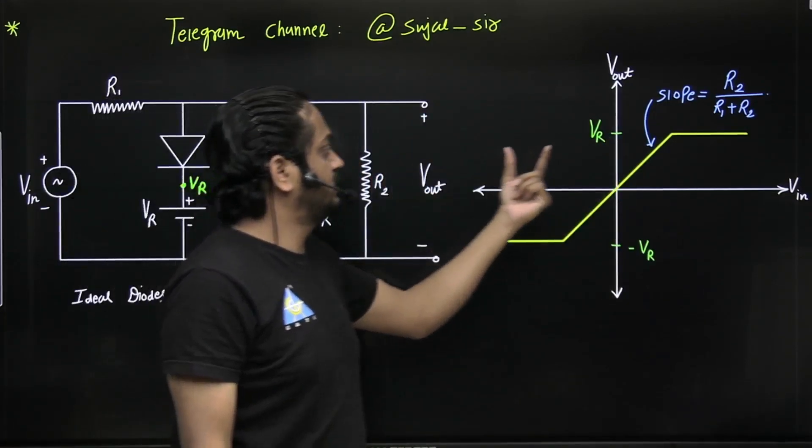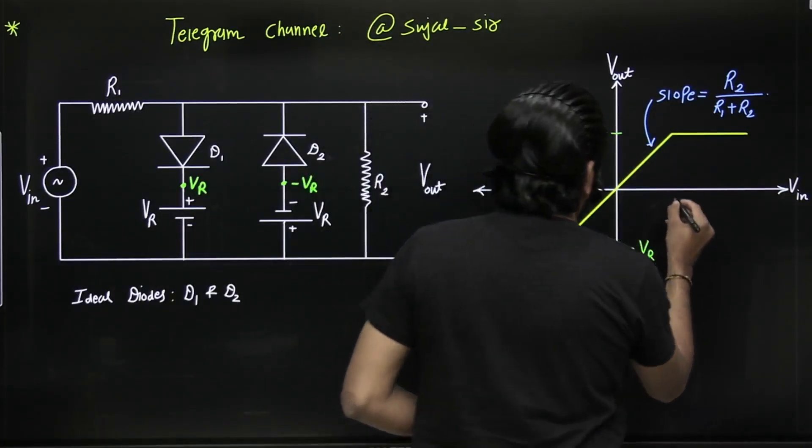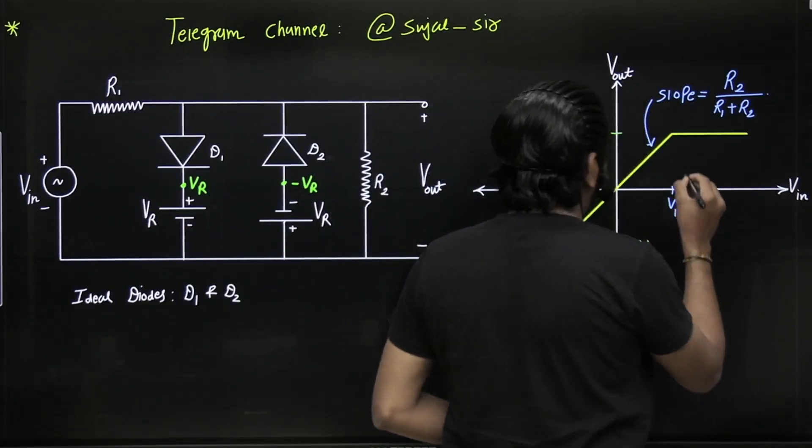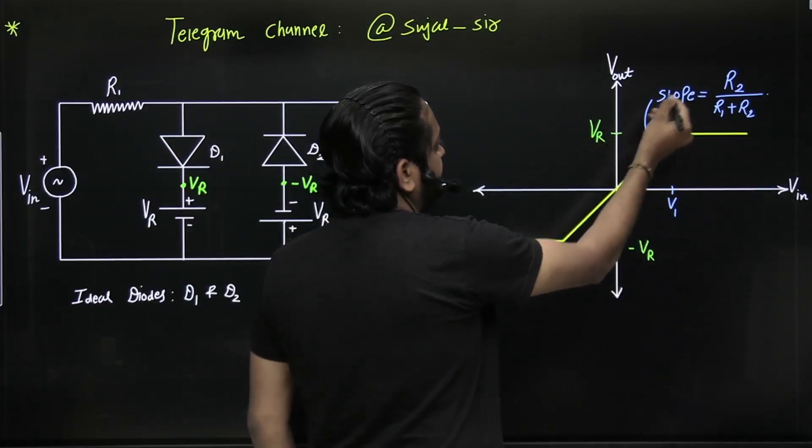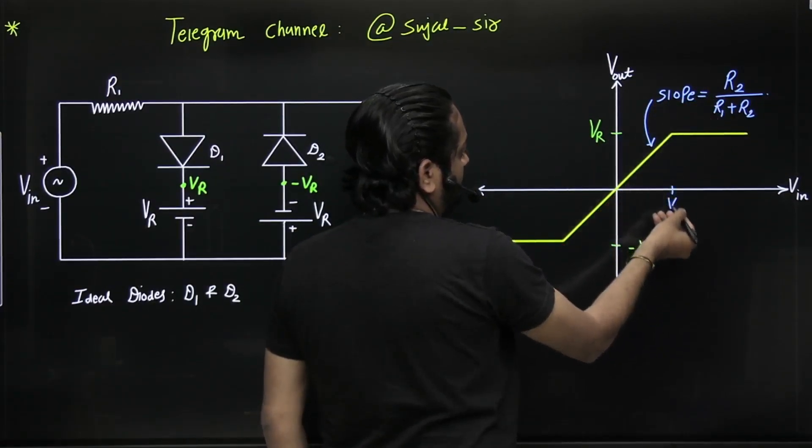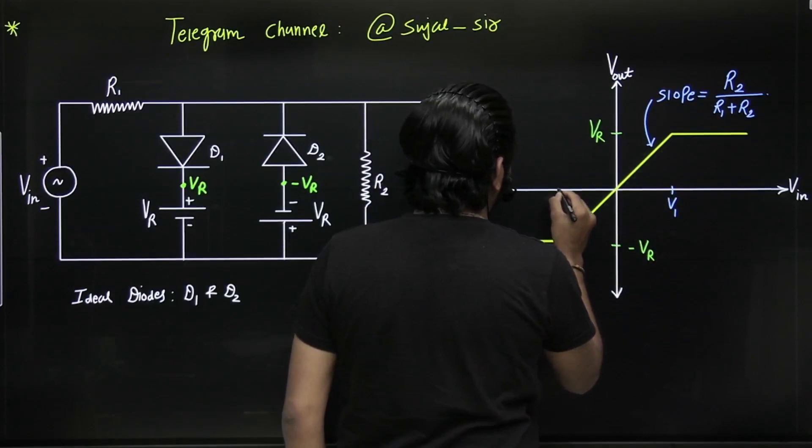Now you got the value of y-axis from these batteries. You got the slope, so of course you can get the value of this x-axis. Slope equals what? dy by dx. Simply slope is what? dy by dx. So you got the value of y-axis, you got the value of slope, so of course this x-axis value you can get.